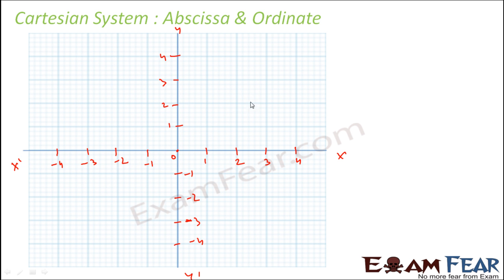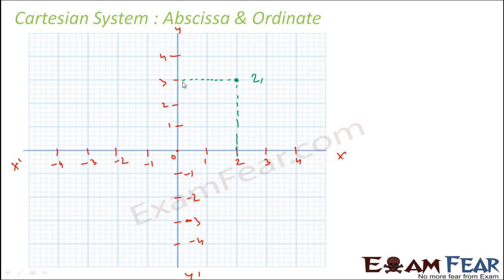Now we want to plot a point. Let's take this point here. If you draw a perpendicular line to the x-axis, it cuts at the value two, so this distance along x is two. And the distance from the y-axis — if you measure that — it comes out to three. So this point is two comma three.